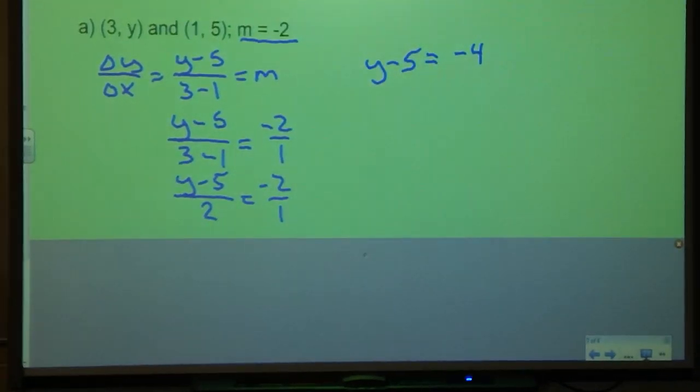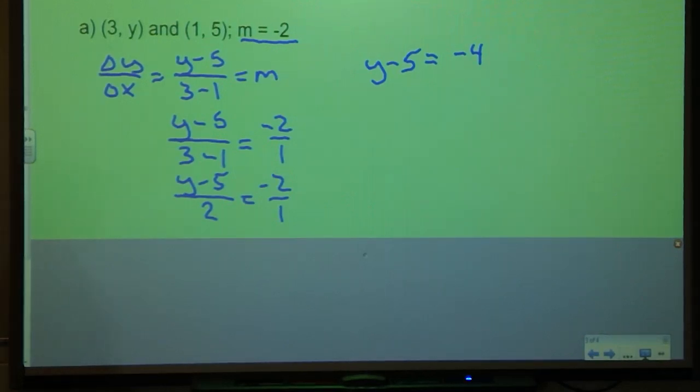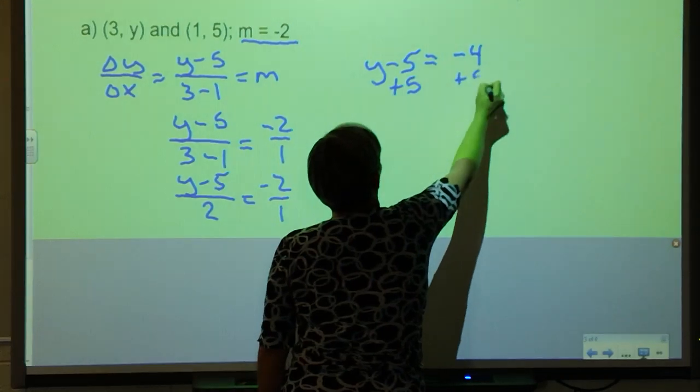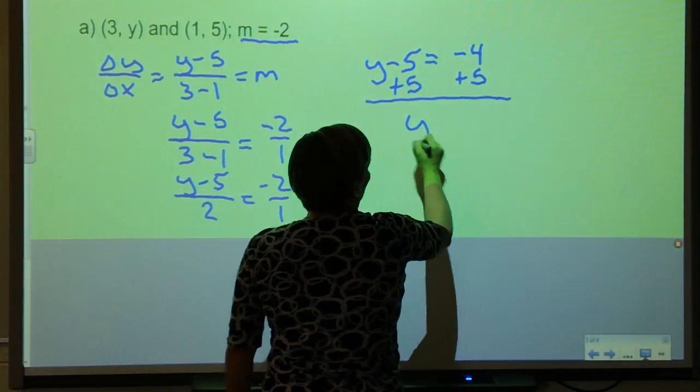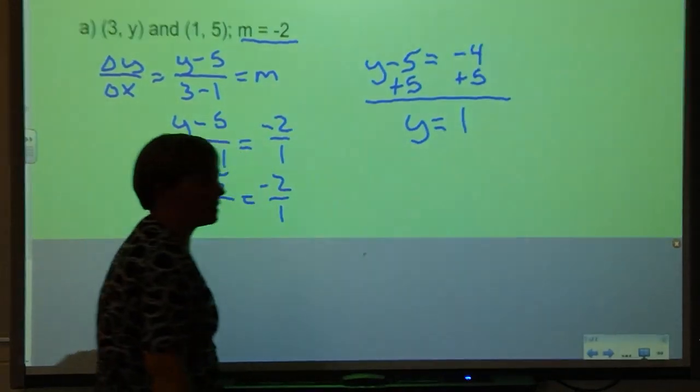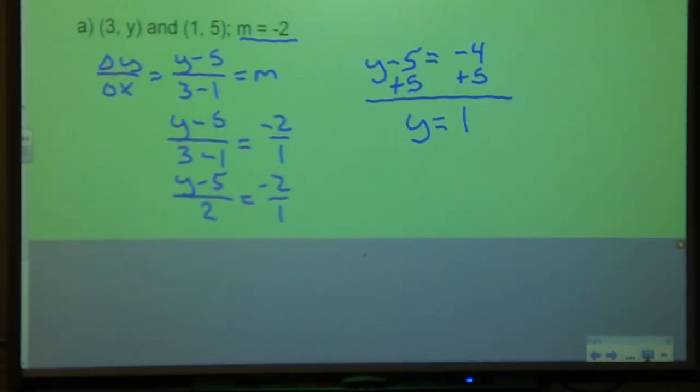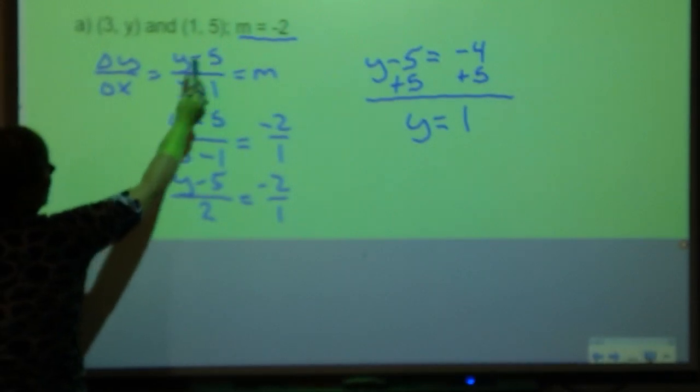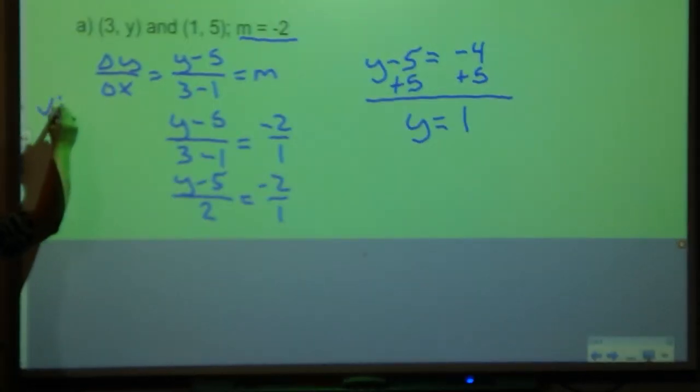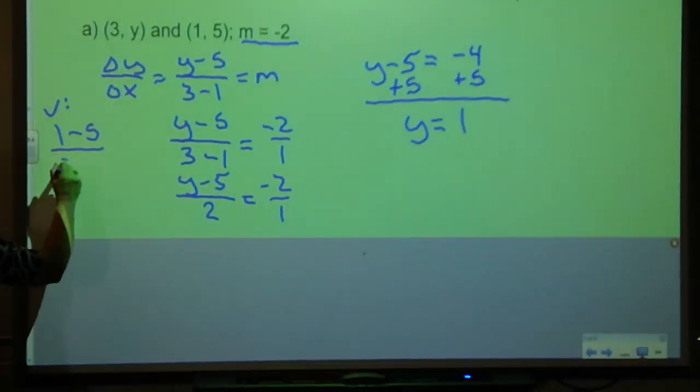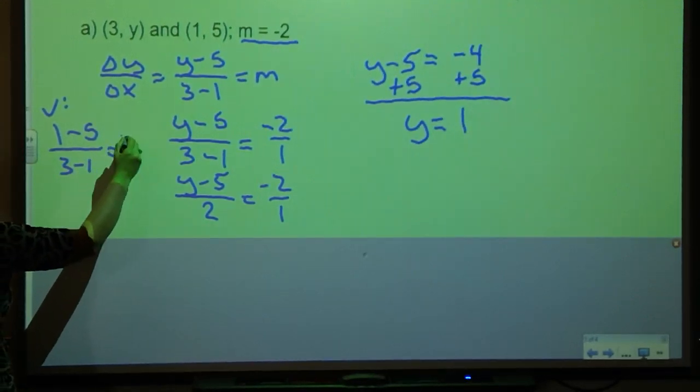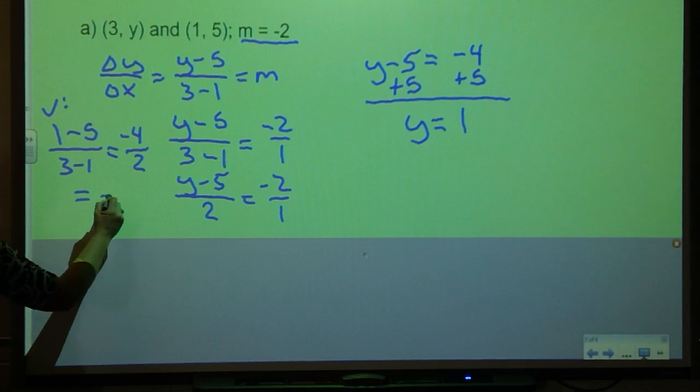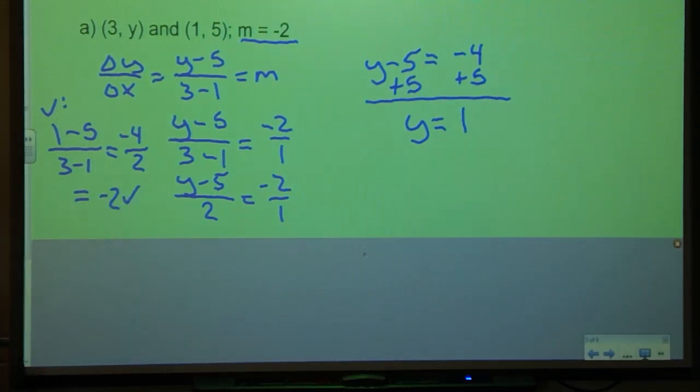From here, it becomes an equation. Just like we've been solving, I'm going to add 5 to both sides. And I'll get y is equal to 1. There is a check for this. If I go back quickly and replace 1 here, I get 1 minus 5 over 3 minus 1, which is -4 over 2, which is in fact -2. So I know I have the answer correct.